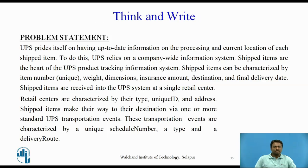Now pause the video and answer the following question. UPS prides itself on having up-to-date information on the processing and current location of each shipped item, relying on a company-wide information system. Shipped items are characterized by item number, weight, dimensions, insurance amount, destination, and final delivery date. Shipped items are received into the UPS system at a single retail center, characterized by their type, unique ID, and address. Shipped items make their way to their destination via one or more standard UPS transportation events, characterized by a unique schedule number, a type, and a delivery route. Draw the entity relationship diagram for this problem statement.